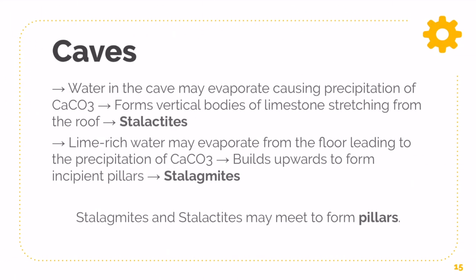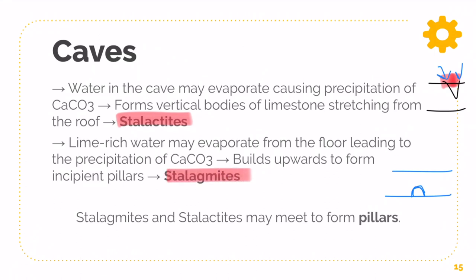Breaking it down: water in the cave that evaporates due to precipitation of CaCO3 — calcium bicarbonate — can form vertical bodies of limestone. Those forming from the roof are stalactites, and those forming on the floor are stalagmites. It depends on where the water dries up. Some water seeps in from cracks at the surface — if it doesn't reach the ground, it condenses up there and forms stalactites. Sometimes it falls to the ground and forms stalagmites at the bottom. When these two actually meet, they form a pillar. You must know stalactites and stalagmites because they are part of the formation of a cave.